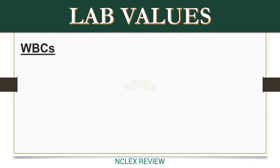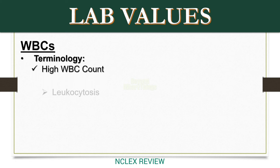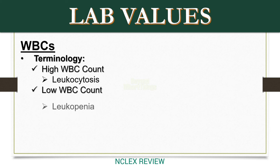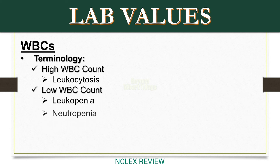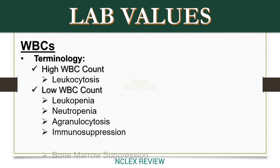Terminology: high WBC count — leukocytosis. Low WBC count — leukopenia, neutropenia, agranulocytosis, immunosuppression, bone marrow suppression.